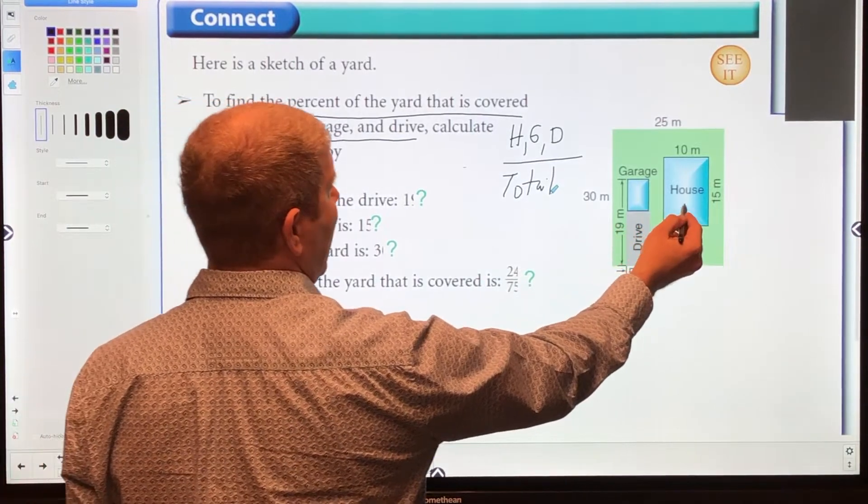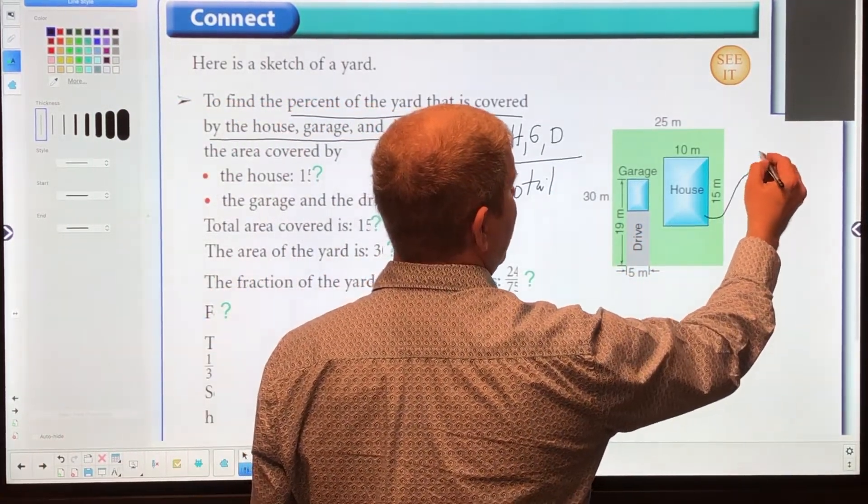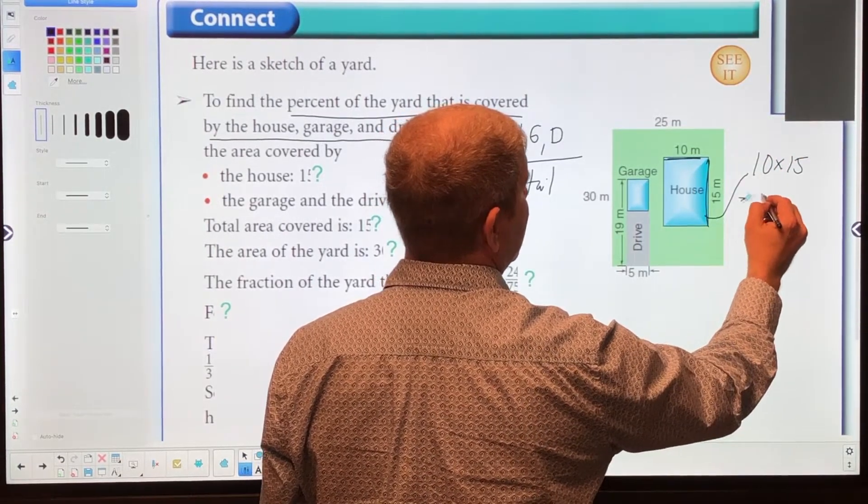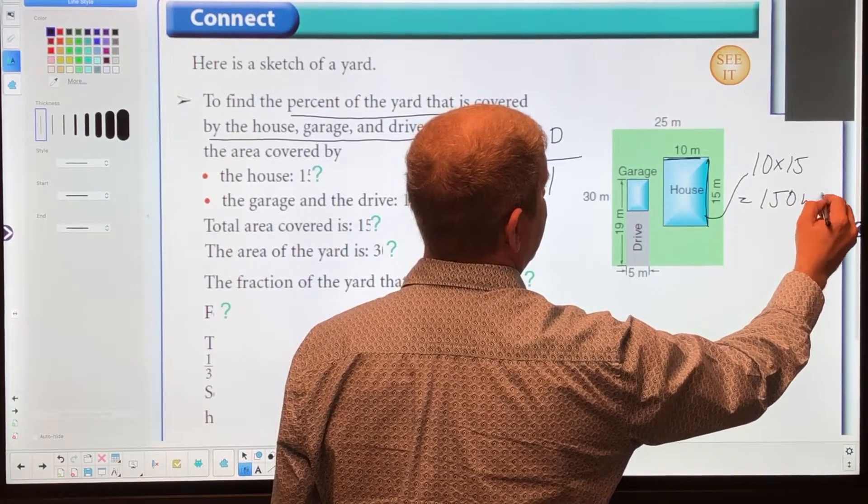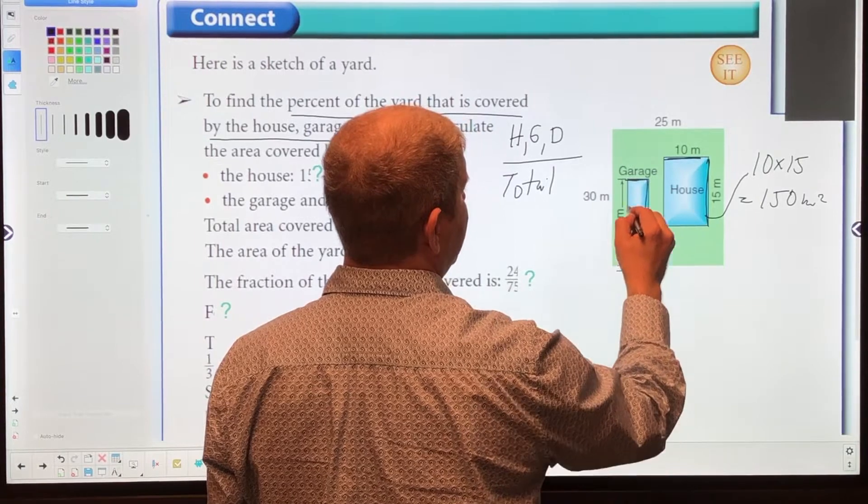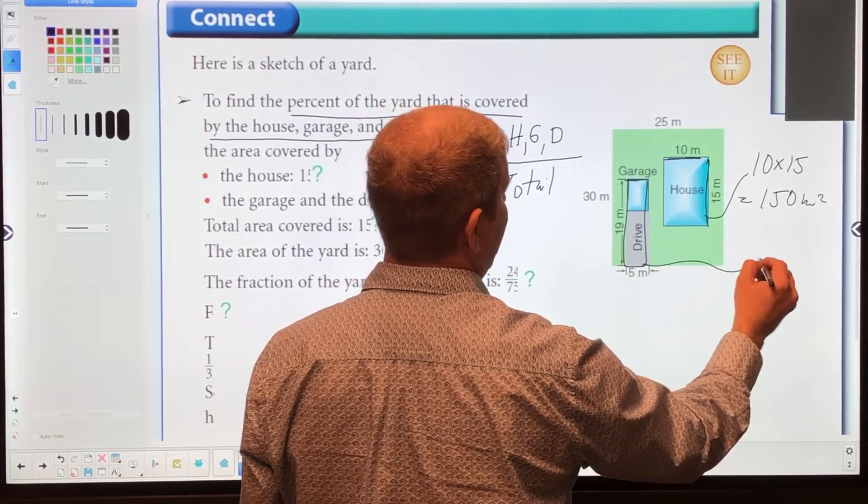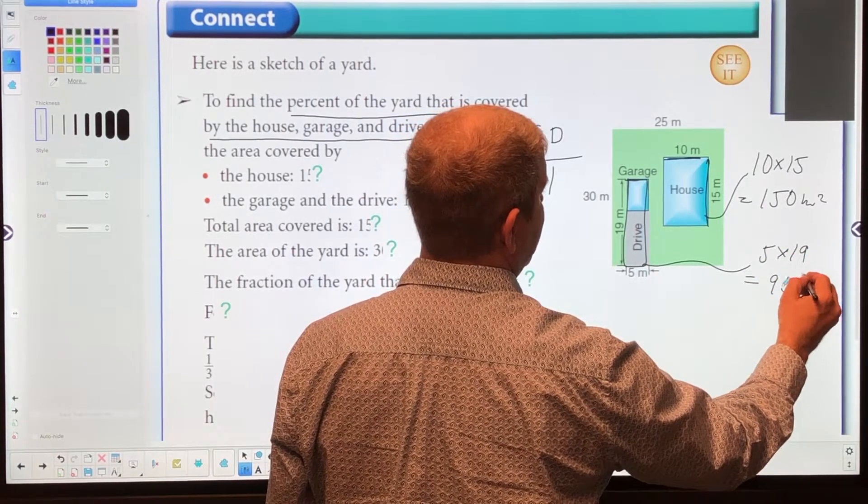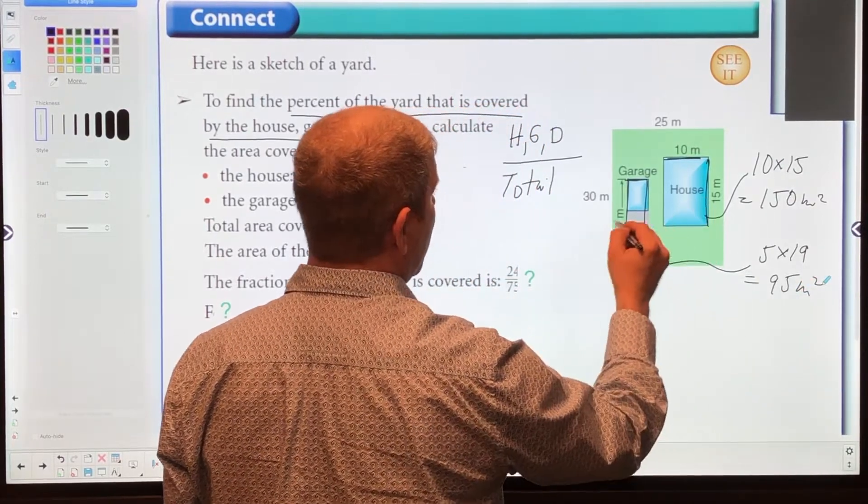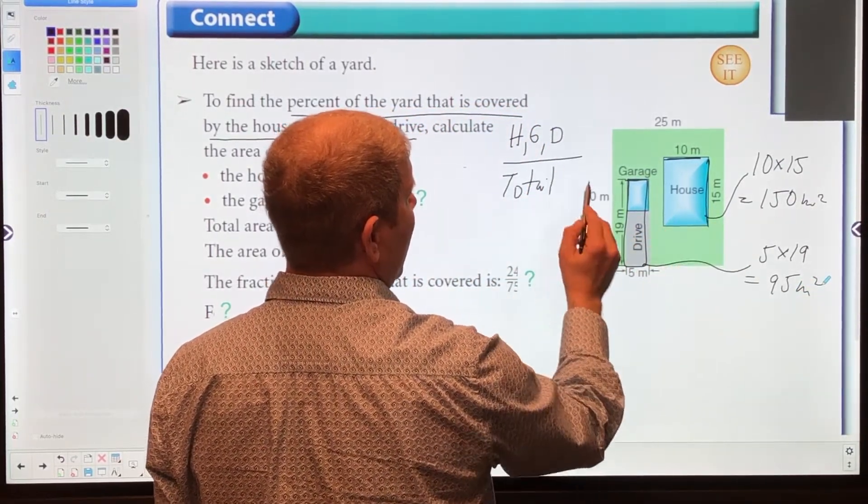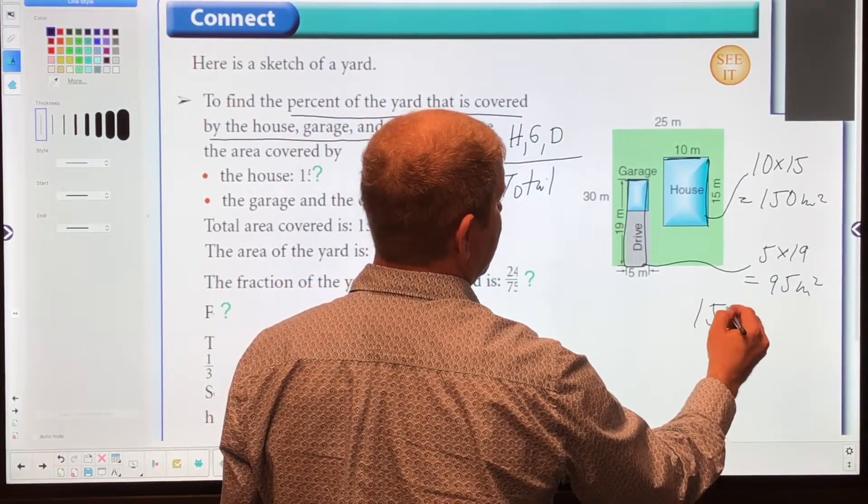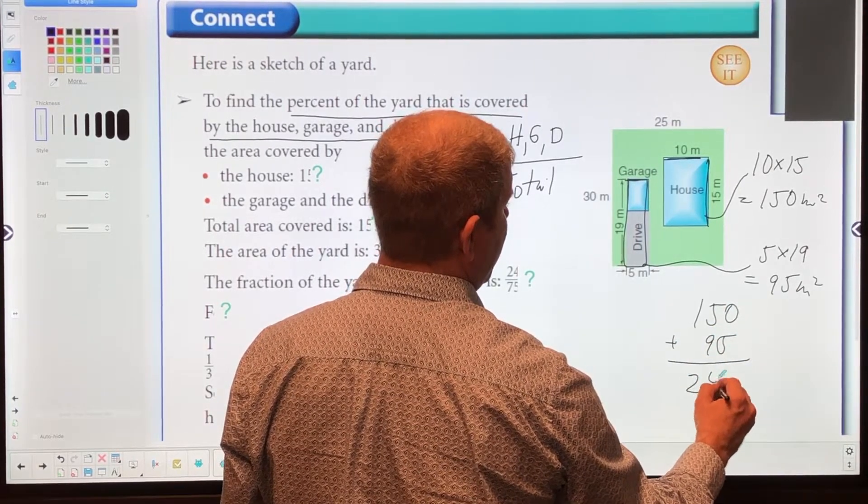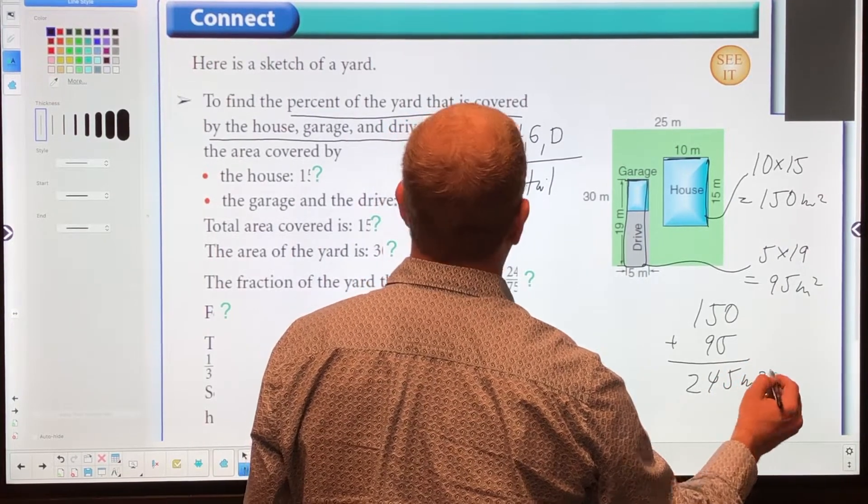First we're going to figure out the area of the house. We have 10 times 15, so that's 150 meters squared. And here we have 5 times 19, so that's 95 meters squared. The total of the house, garage, and drive is 150 plus 95 meters squared, which gives us 245 meters squared.